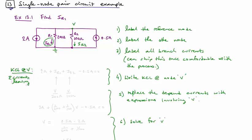So we have 2 amps leaving through the left source. We have IR1 leaving. We have IR2 leaving. And we have minus 0.5 amps leaving. That all sums to zero.